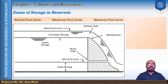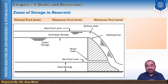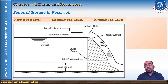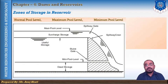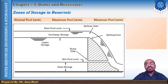The normal pool level is the maximum elevation to which the water will rise in the reservoir during ordinary operating conditions. That level or elevation is known as the normal pool level. In the case of an ungated spillway, the normal pool level corresponds to the crest level of the spillway. But in the case of a spillway with gates, the normal pool level is taken as the top level of the spillway gates. Sometimes this normal pool level is also known as the full reservoir level.